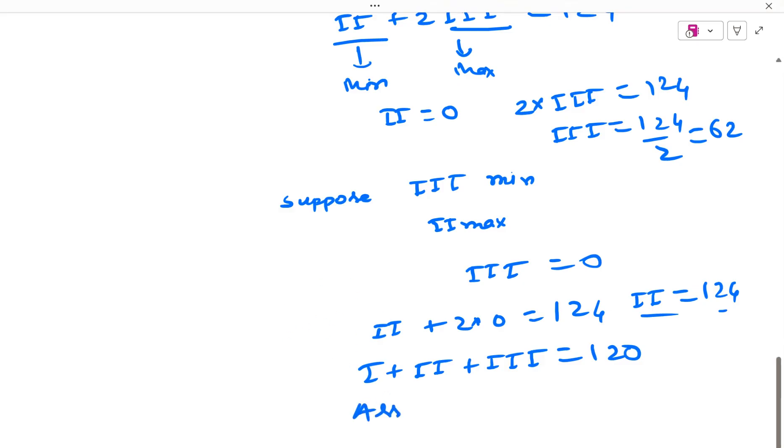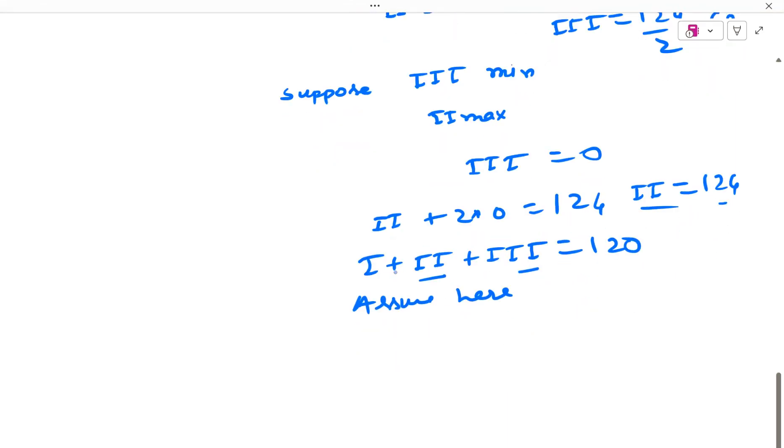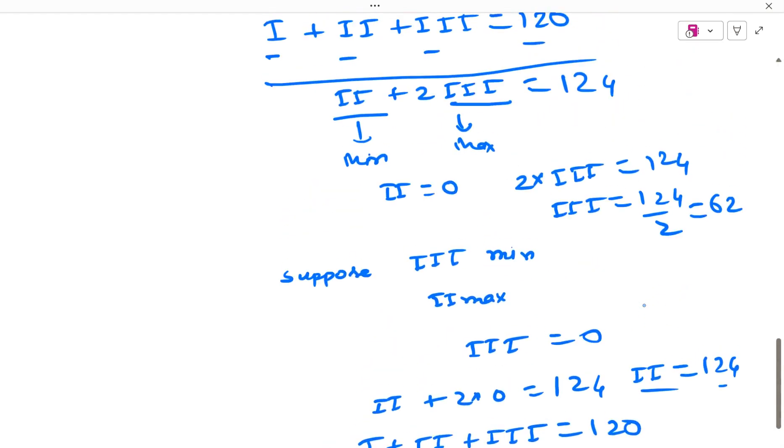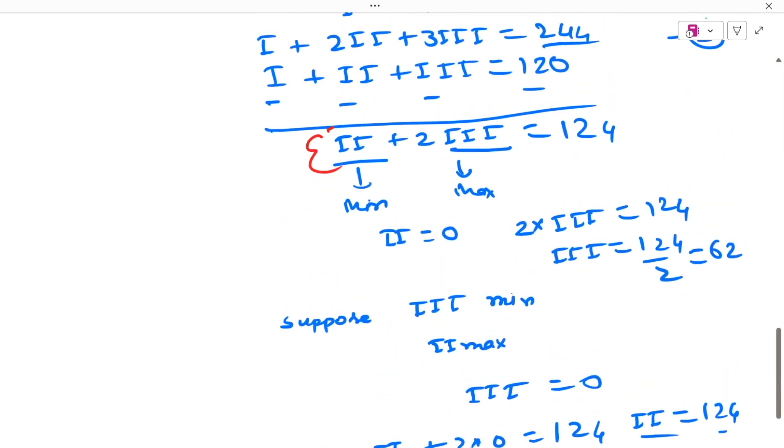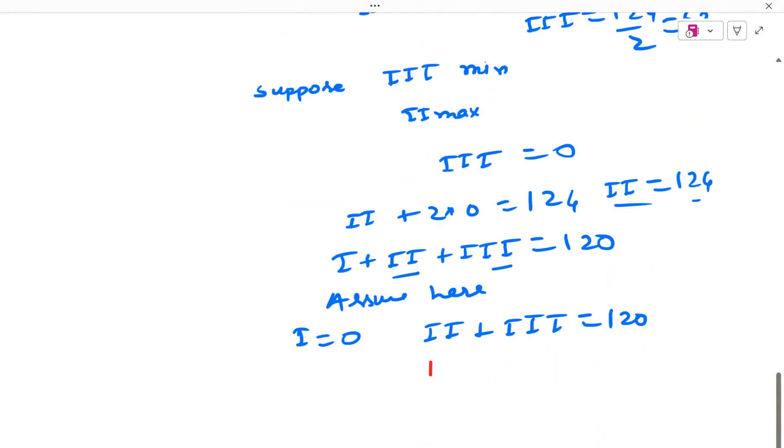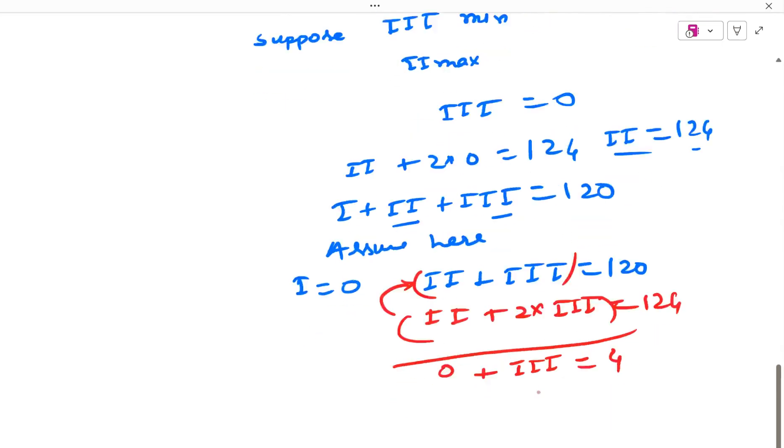So what we will do now is take these two equations. We will just assume here that as we are trying to maximize and minimize 2 and 3, let us assume that 1 is 0. We will just assume that 1 area is 0 because we are not actually focusing on 1. We are just trying to minimize and maximize 2 and 3. So 2 plus 3 will become 120. And from equation which we got after subtracting, 2 plus 2 into 3 is 124. So these two equations we get. If I subtract this one, the top one from the bottom one, what I will get? I will get 0 plus 3 is equal to 4.